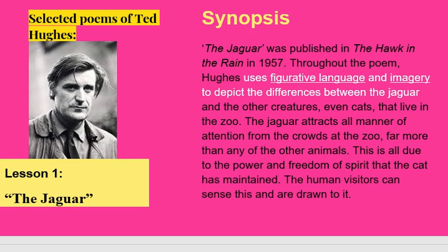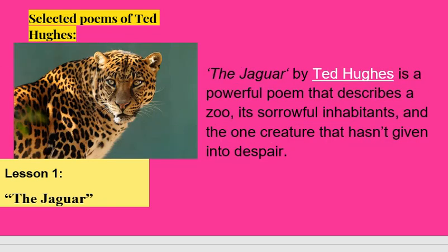Synopsis of the poem The Jaguar by Ted Hughes. The Jaguar was published in 1957. Throughout the poem, Hughes uses figurative language and imagery to depict the differences between the Jaguar and the other creatures, even cats, that live in the zoo. The Jaguar attracts all manner of attention from the crowds at the zoo, far more than any of the other animals.